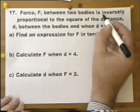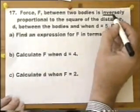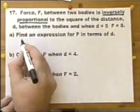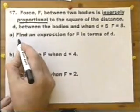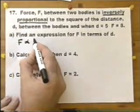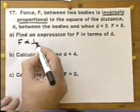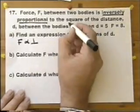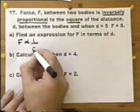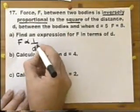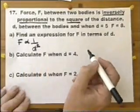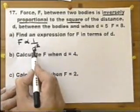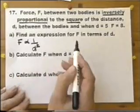Now first off, let's look at this 'inversely proportional to.' When we write one over something, that's inversely proportional to. And it does say the square of the distance, so therefore we need the distance squared. So the force is inversely proportional to the square of the distance.